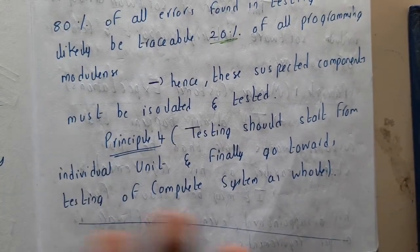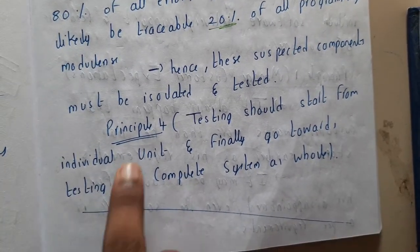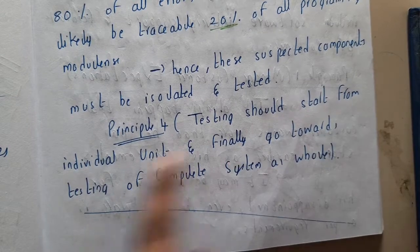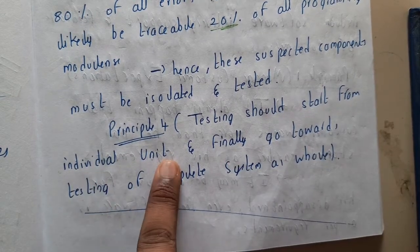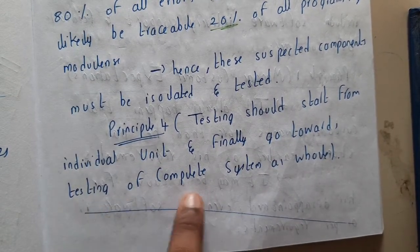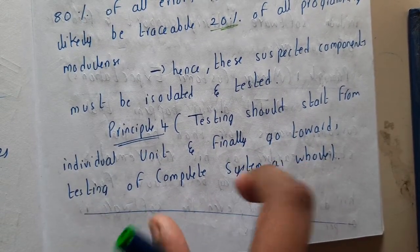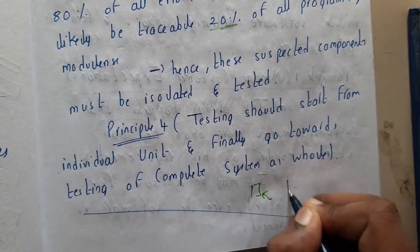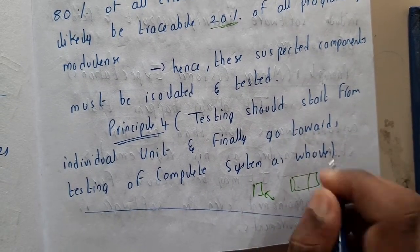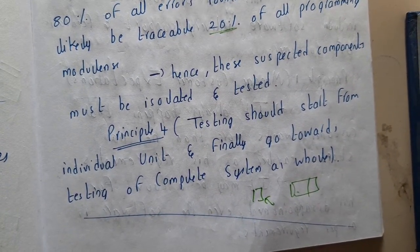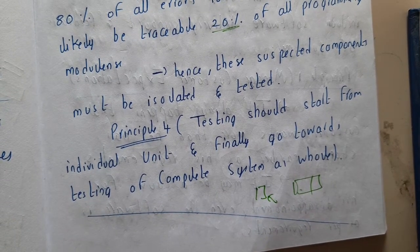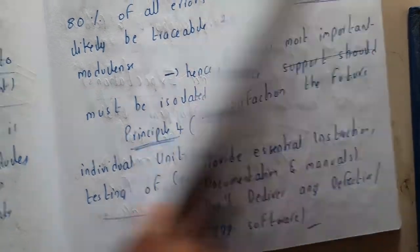Principle four: testing should start from the individual unit and finally go towards testing a complete system. We call it unit testing for a single unit, and integrated testing when two or more units are combined based on their common properties.